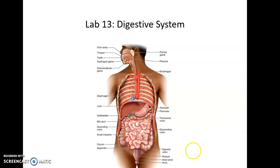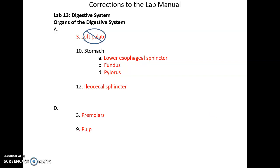Lab 13, digestive system. Starting on page 137, there are a few things to cross off. Under the mannequin ancestral head model, cross off soft palate — it's too close to the uvula to do both. For the stomach, we'll be calling the lower esophageal sphincter by that name, so cross out 'cardiac.' Cross out 'fundic region' and write fundus. Cross out 'pyloric region' and write pylorus. For the ileocecal connection, we'll call it the ileocecal sphincter, so cross out 'valve.'